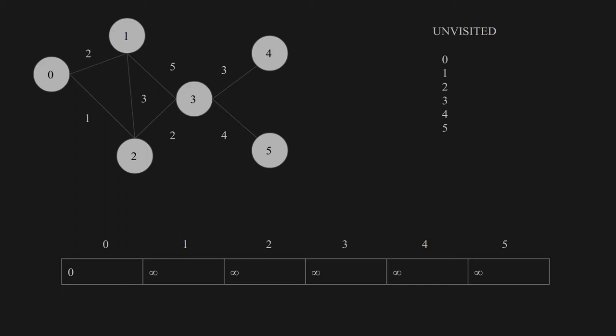Now we start visiting the houses. Our first stop is the starting house, which is house 0. I take it off the unvisited list and mark it red so that we know it's been visited. Now we see all its neighboring houses: house 1 and house 2. We update their distances only if the new distances are smaller than the existing ones. For house 1 the distance from house 0 is 2, which is less than infinity, and similarly for house 2. So we update these values. And we are done with house 0.